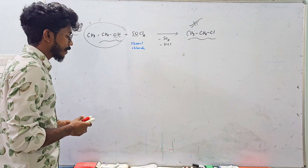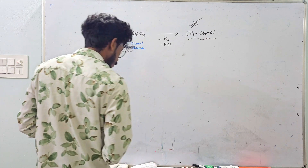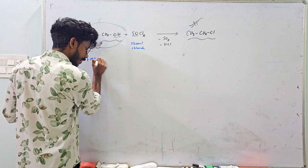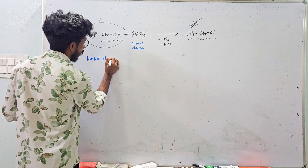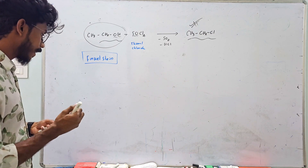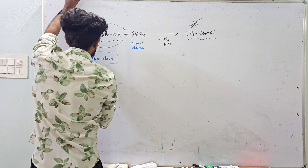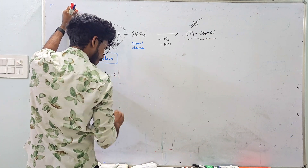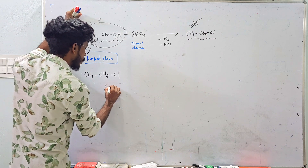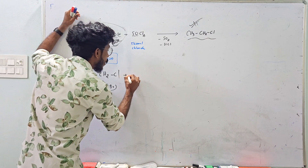The first named reaction to know is the Finkelstein reaction. In the Finkelstein reaction, an alkyl halide is treated with sodium iodide (NaI) in acetone to exchange the halogen. The halide group is replaced. The first reagent used is sodium iodide.